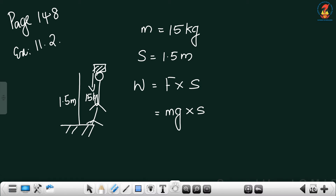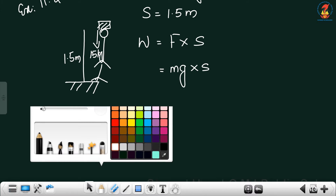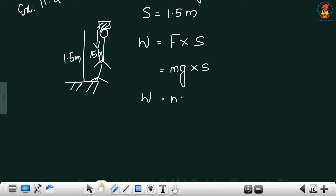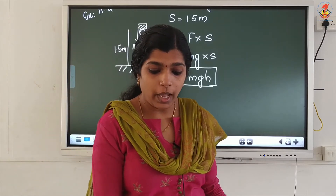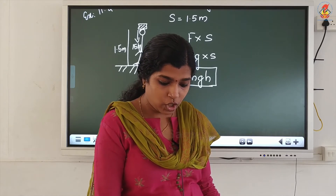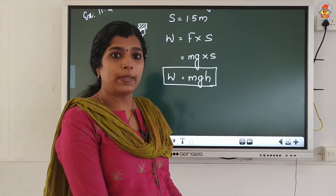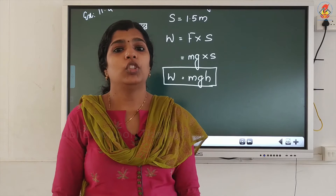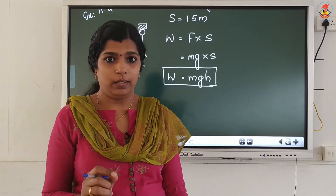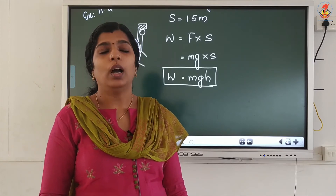So we can write it as W = M × G × S, or Work done = MGH. If you are lifting an object from the ground, you can find the work done using this equation: W = MGH. Here H is the height or displacement of the object, and G you can take as 9.8 or 10. If the value is given in the question use that, otherwise take G as 10.